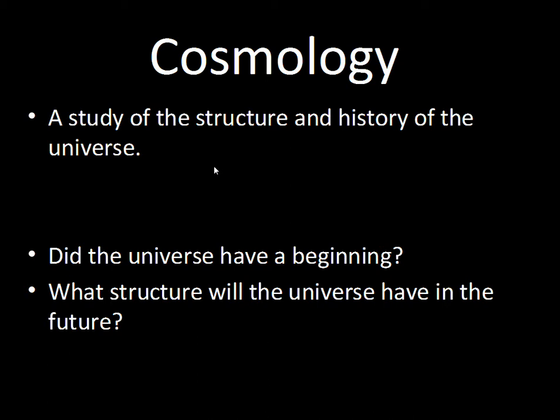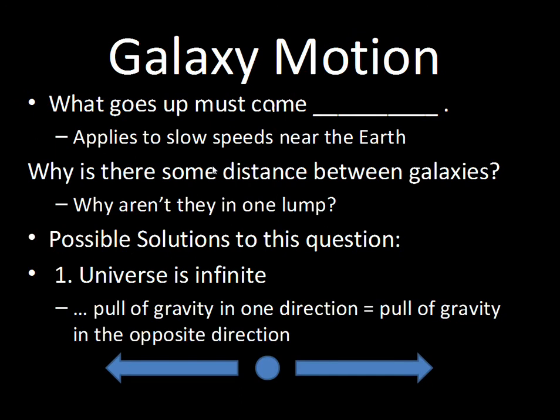First, let's talk about motion — some concepts we experience on Earth. If we throw something up — a baseball, an apple, a football — it goes up for a while and then comes back down. Near the Earth, our arms or feet cannot propel something at a speed where it will escape, so what goes up must come down. That applies near the Earth to low-speed objects.